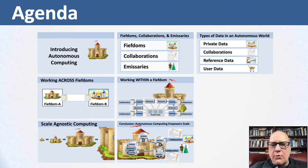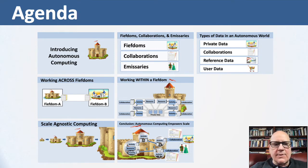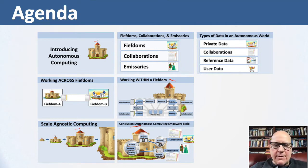Next, we go to working across fiefdoms — how do we do work when we're in an independent autonomous world and trying to negotiate with messages? Then we move into working within a fiefdom, looking at how we break pieces of work up to handle long-running work and manage resources. That takes us to the heart of this presentation: scale agnostic computing — how you can have a pattern where programmers don't care about scale, but the system can scale. And we conclude by reinforcing how autonomous computing can empower scale.